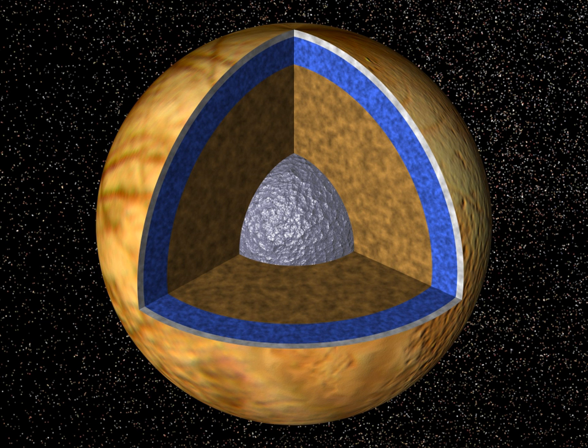Such planets would have to be small enough not to be able to retain a thick envelope of hydrogen and helium, or be close enough to their primary star to be stripped of these light elements. Otherwise, they would form a warmer version of an ice giant instead, like Uranus and Neptune.